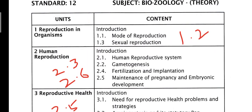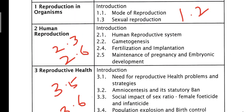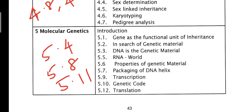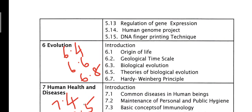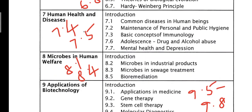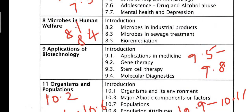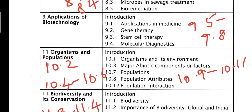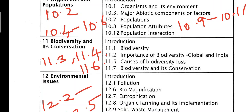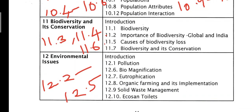We will cover heading 1.1 Mode of Reproduction, and headings 1.2, 2.3, 2.6, 3.5, 3.6, 3.7, 4.8, 4.9, 5.4, 5.8, 5.11, 6.4, 6.6, 6.8, 7.4, 7.5, 8.1, 8.4, 9.5, 9.6, 9.7, 9.8, 10.2, 10.4, 10.5, 10.6, 10.9, 10.10, 10.11, 11.3, 11.4, 11.6, 12.2, 12.3, 12.4, 12.5.